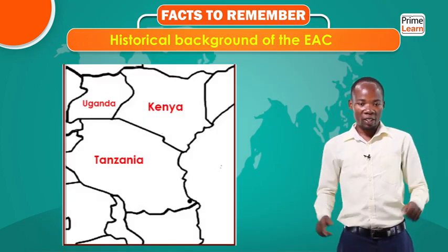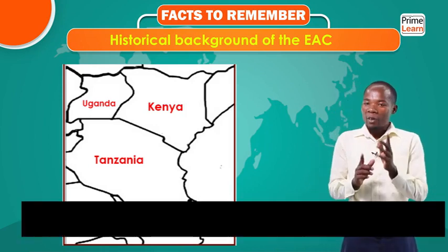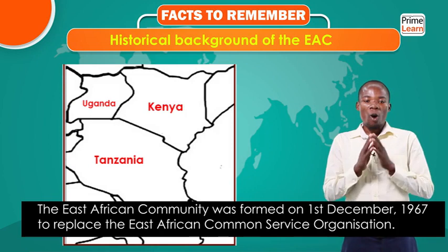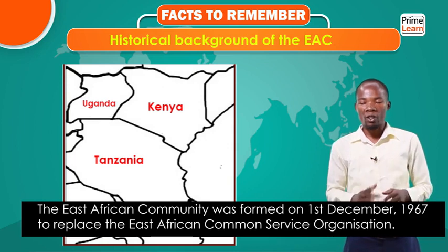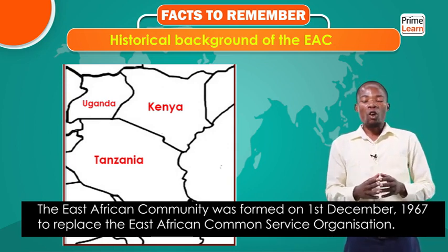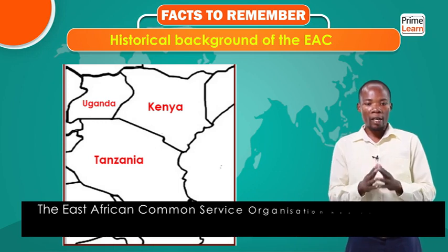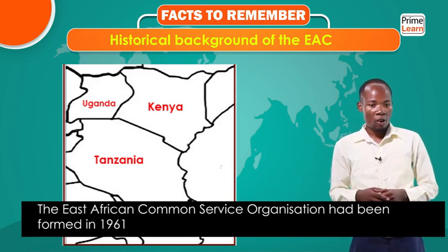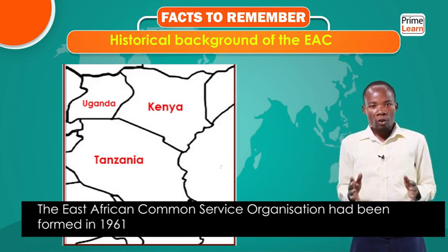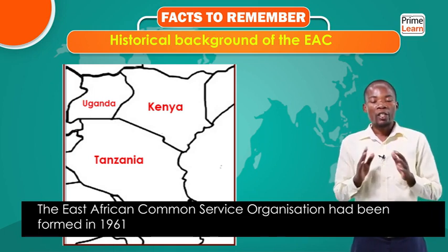Before I move forward, we have facts to remember. We are going to look at the historical background of the East African Community. The East African Community was formed on 1st December 1967, to replace the East African Common Services Organization, EACSO, which had been formed in 1961. That organization collapsed when it failed to fulfill its objectives.